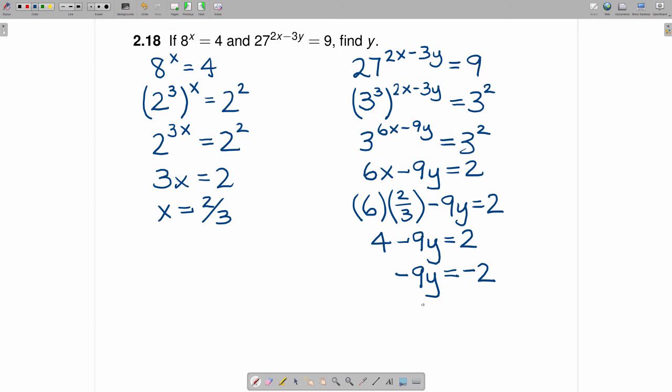The way you solve that equation is you divide both sides by negative 9. When you divide the left-hand side by negative 9, you get y. When you divide the right-hand side by negative 9, you get 2 ninths. And y equals 2 ninths is the y value that solves both of these equations.